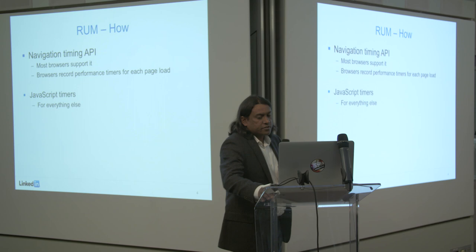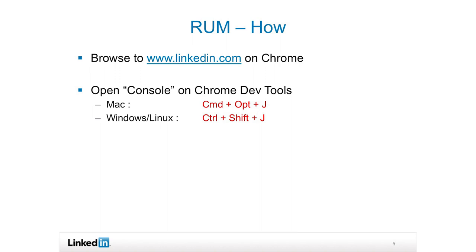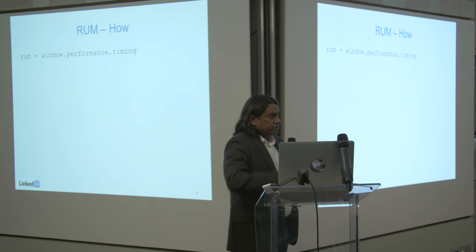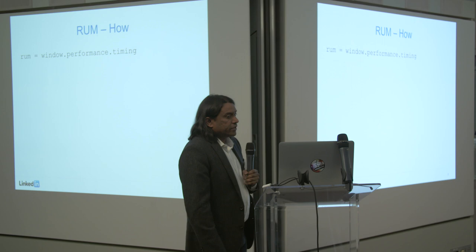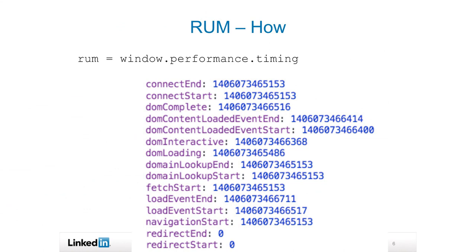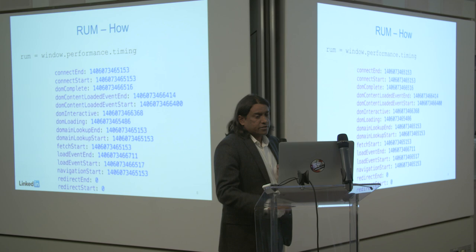A lot of you have laptops open right now. If you go to linkedin.com or your favorite website, just do Command-Option-J if you're on Mac and load it up, and you will see a little bar that comes on the side. Type in ROM equals window.performance.timing, and you'll see very interesting data set for you. This is actually the data that we can collect from every end user that's clicking along our web pages. You can see connect time, connect end, connect start, load time for the page and end.